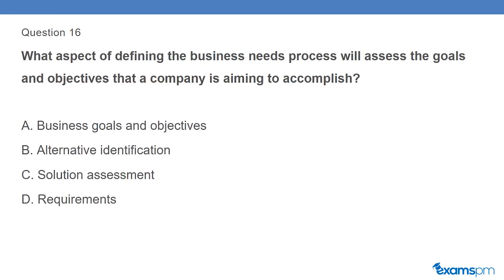Question 16: What aspect of defining the business needs process will assess the goals and objectives that a company is aiming to accomplish? A. Business goals and objectives. B. Alternative identification. C. Solution assessment. D. Requirements.